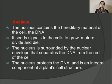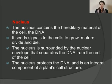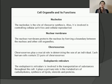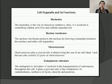The nucleus is present in both plant and animal cells, and its main function is that it contains DNA which helps in sending signals for growth, maturation, and division. The nucleolus is the site of ribosome synthesis and is also involved in controlling cellular activities and cellular reproduction — how and when the cell will divide. The nuclear membrane is the outermost covering of the nucleus; it protects the nucleus from damage and confines the DNA inside the nucleus.